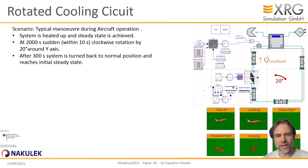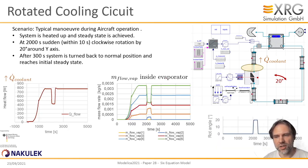And the last example I want to present is our rotated cooling circuit from the beginning. That's the scenario. The circuit is heated up to steady state. Then it's turned within 10 seconds, about 20 degrees, clockwise. Then it's left there for five minutes. And then it's turned back. So we see the heat flow that is taken by the coolant mass flow. And we see also the mass flow of the vapor inside the evaporator here. So the model can deal with these kinds of problems.